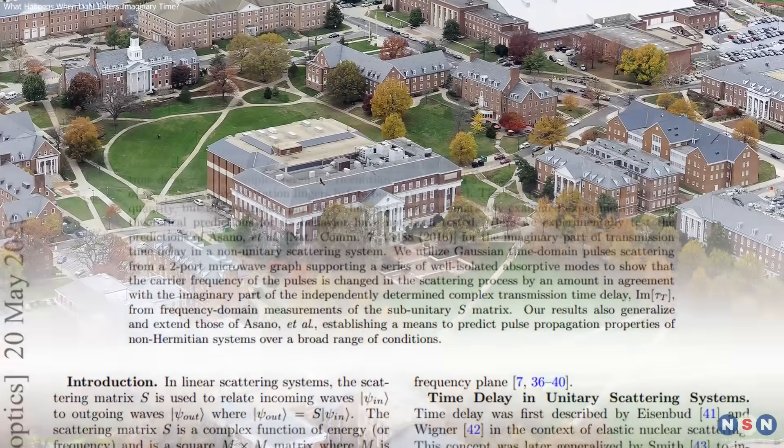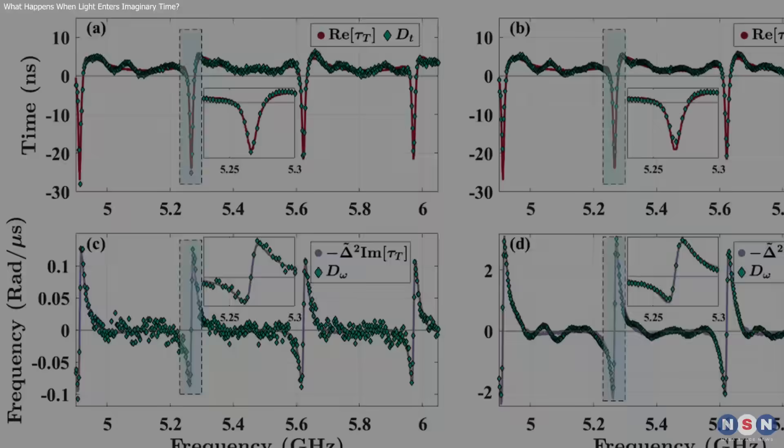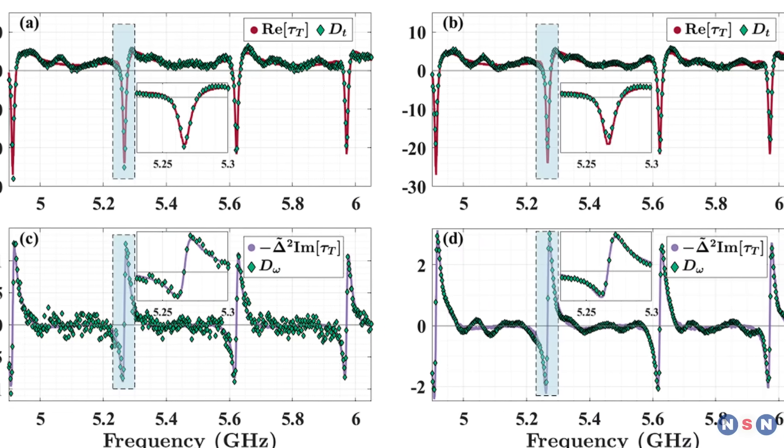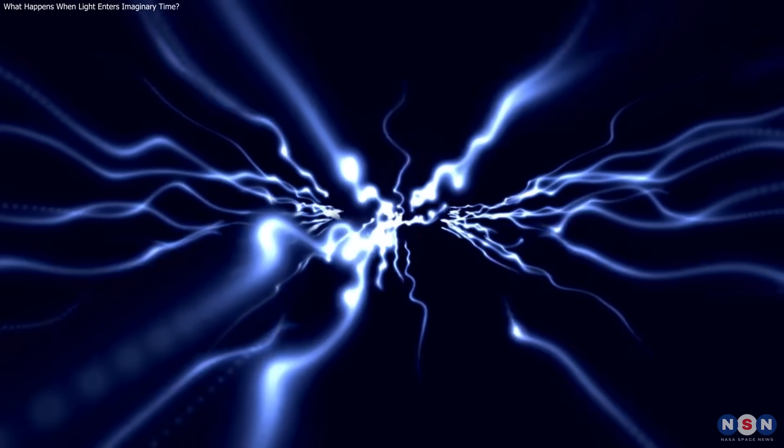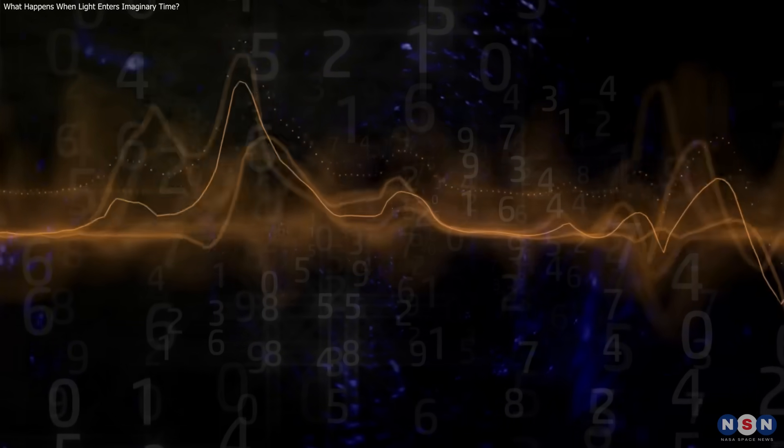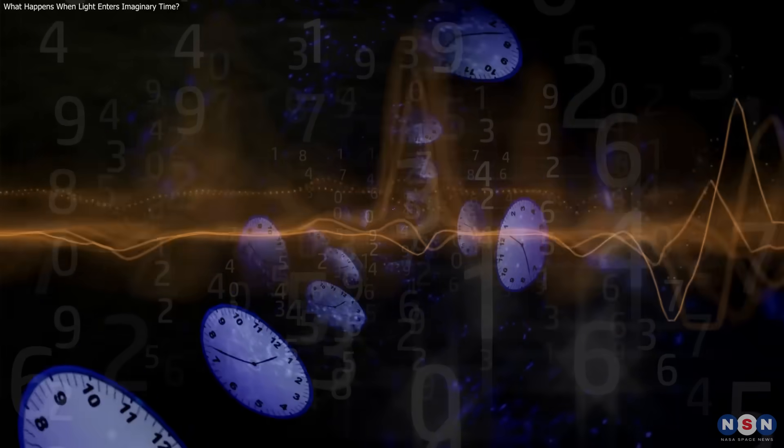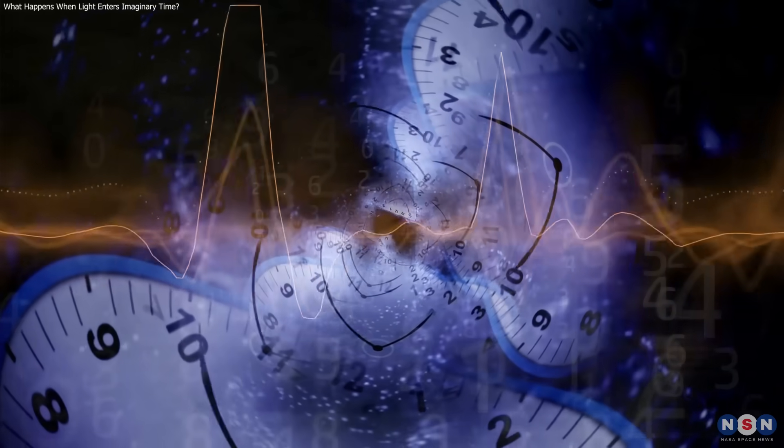The University of Maryland's experiment marks the first time imaginary time has been observed as a real physical effect. By tracking microwave pulses in a closed system, researchers showed that complex time isn't just theory.